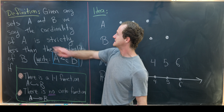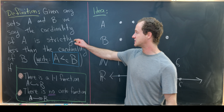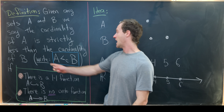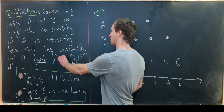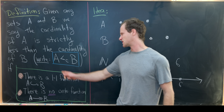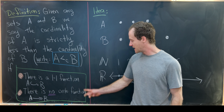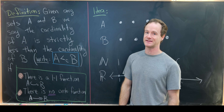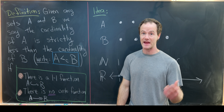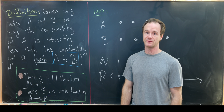Given any sets A and B, we say that the cardinality of A is strictly less than the cardinality of B — we write A with a less-than symbol and a subscript C, B — if these two things are satisfied: there is a one-to-one function from A to B, but there is no onto function from A to B.